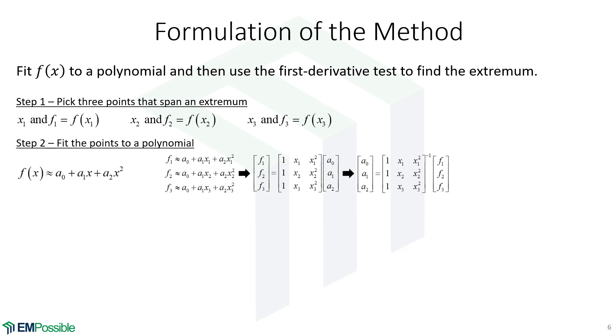Then we'll fit the points to the polynomial and we'll calculate those polynomial coefficients, a naught, a1, and a2. Now, given that we have a polynomial, we will calculate its first derivative. So our polynomial is a naught plus a1 times x plus a2 times x squared. If we calculate the derivative of this, here's our first derivative.